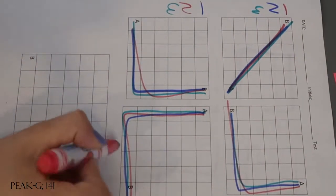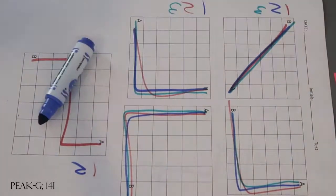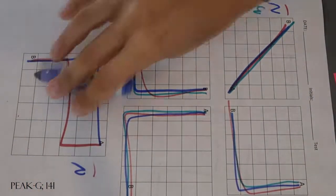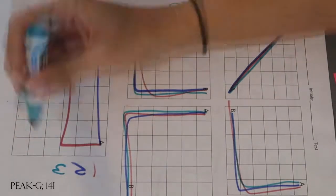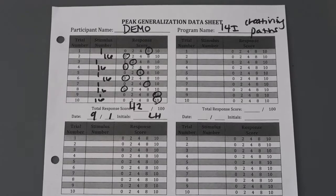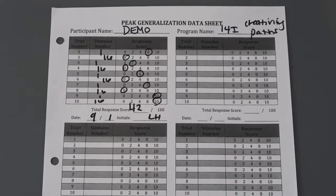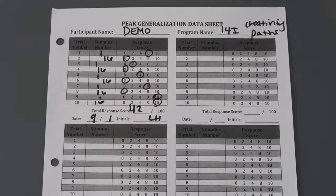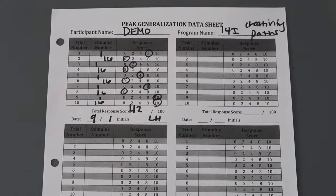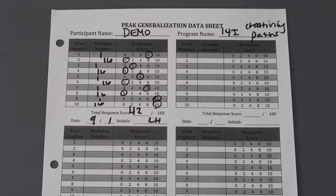Make a path from A to B. Let's do purple — make another path from A to B. Last one in green — make another path from A to B. Go ahead and check your scores for Peak Generalization Creativity Paths 14i. Bye!